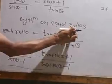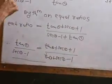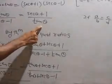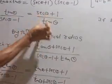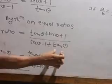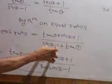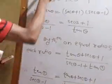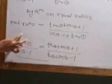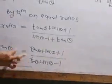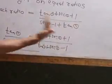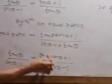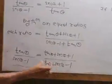This can be used by the theorem on equal ratio: each ratio equals sum of numerator upon sum of denominator. That means tan theta plus sec theta plus 1 upon sec theta minus 1 plus tan theta. So we can write that tan theta upon sec theta minus 1 equals tan theta plus sec theta plus 1 upon tan theta plus sec theta minus 1.